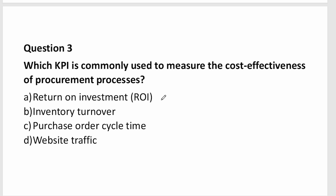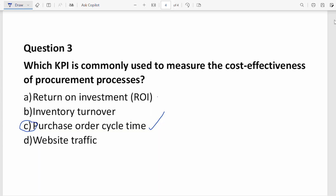Purchase order cycle time makes sense in procurement — it measures from when you place an order to when you actually receive the goods. Web traffic does not apply. These are examples of the questions they can ask regarding KPIs, but it's not the only thing they test.